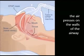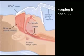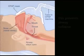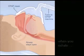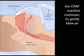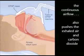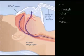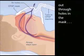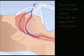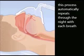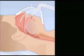The air presses on the walls of the airway, keeping it open. This prevents airway collapse. When you exhale, the CPAP machine continues to gently blow air to keep your airway open. The continuous air flow also pushes the exhaled air and carbon dioxide out through holes in the mask. This process automatically repeats throughout the night with each breath, allowing you to breathe uninterrupted during sleep.